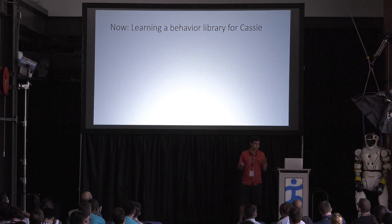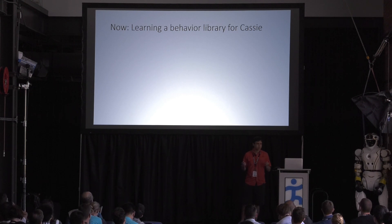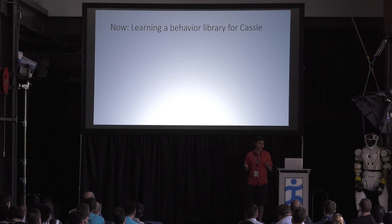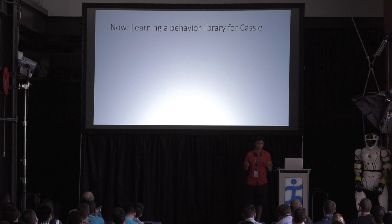So that brings us to what I'm going to discuss today, which is learning a library of policies for generating useful locomotion behavior on CASSIE. Specifically, I'm looking at using stochastic policy gradient methods to optimize policies in simulation and then transfer them to hardware.